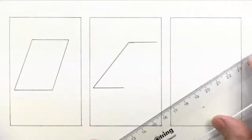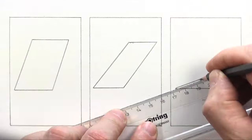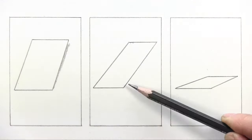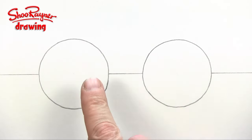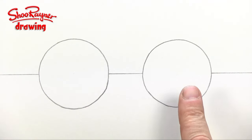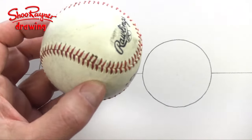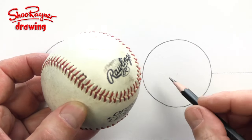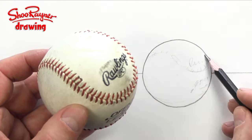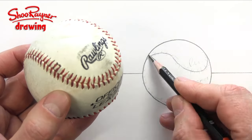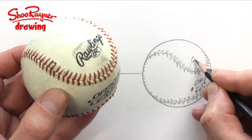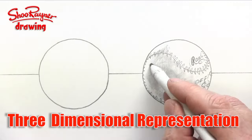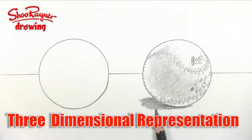The shallower the angle, the flatter the object seems to lie on the imaginary floor. This is a circle and this is a ball. They look the same, but if we add some detail to the ball, it begins to look real, almost as if you could reach out and pick it up off the page. Both are two-dimensional drawings, but the ball is a three-dimensional representational drawing.